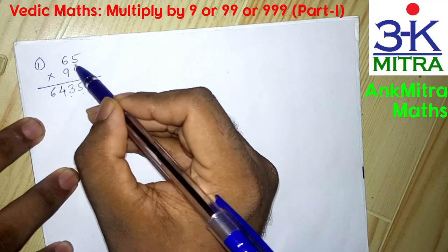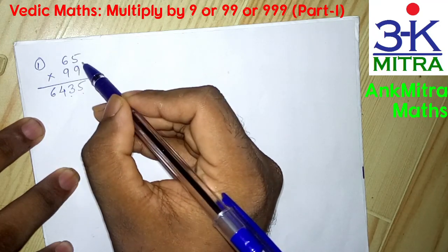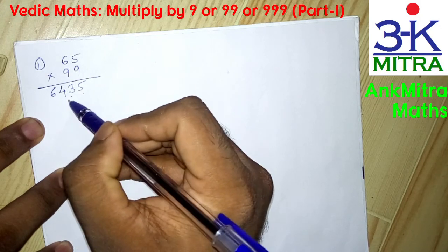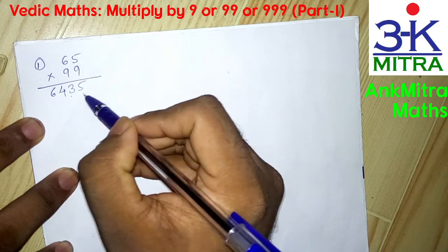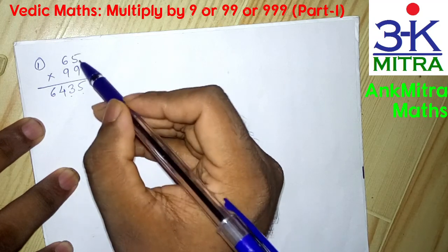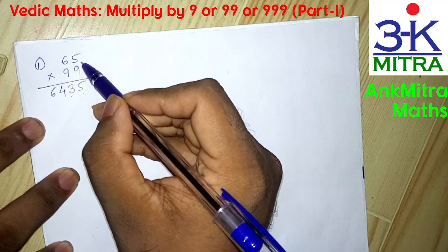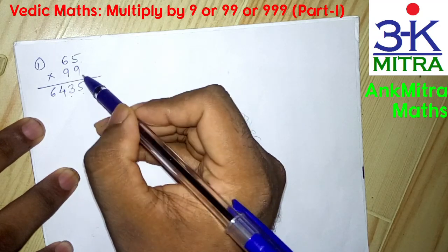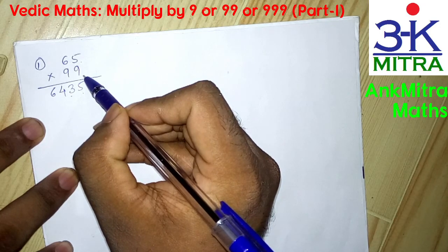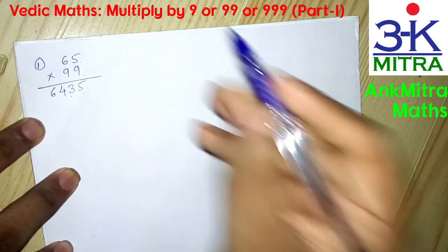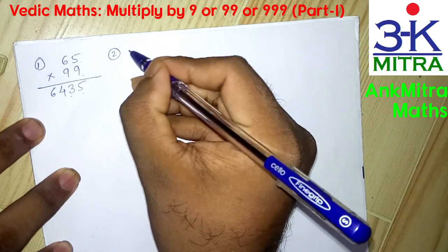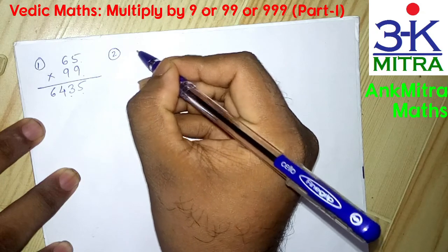To repeat: we reduced 1 from 65 and wrote down 64 for the higher place values, and for the tens and units place we subtracted 65 from 100, 100 being the base number for 99. Let's look at another example.